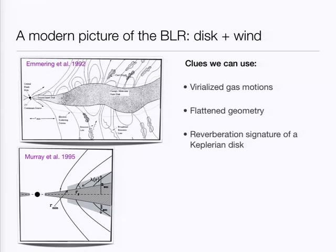These are pictures from papers that have considered this idea, going back to Emmering, Blandford, and Schlossman from 1992 — a disk which is losing gas along magnetic field lines, where the gas launching from the disk is the source of the broad emission lines. A later model by Murray and collaborators was originally proposed to explain broad absorption line quasars, but within the context of that picture there are ingredients for understanding the broad emission line gas. The suggestion is that there is a layer on the surface of the disk that's about to launch as a result of radiation pressure — and that layer is the origin of the broad emission lines. That layer is not static; it has a very small velocity but a very high velocity gradient because it's starting to lift from the disk. That velocity gradient, coupled with proper radiative transfer calculations, makes all the difference in shaping the line profiles.